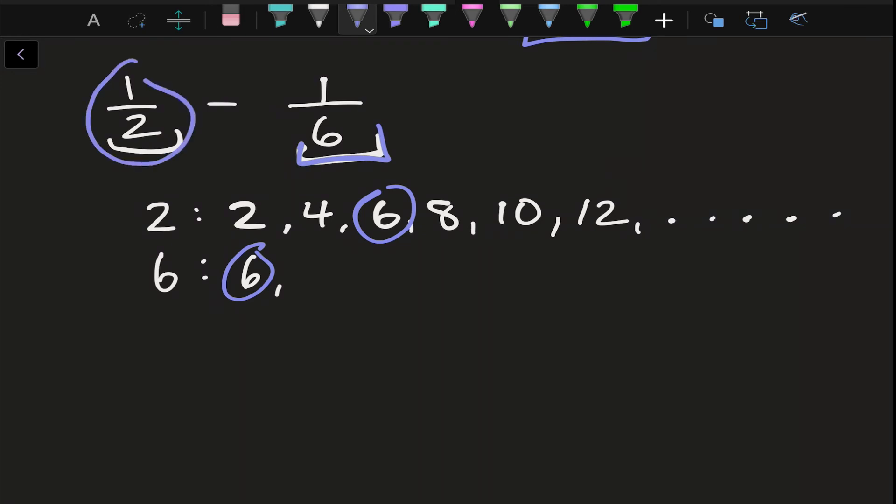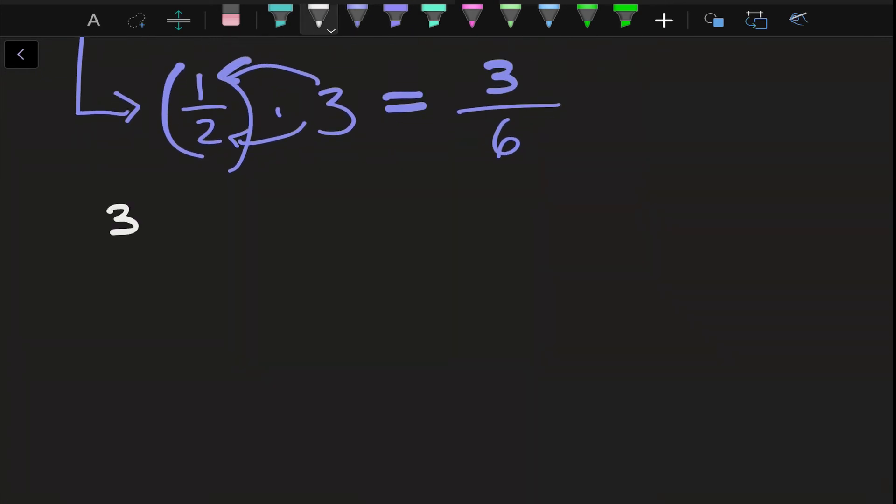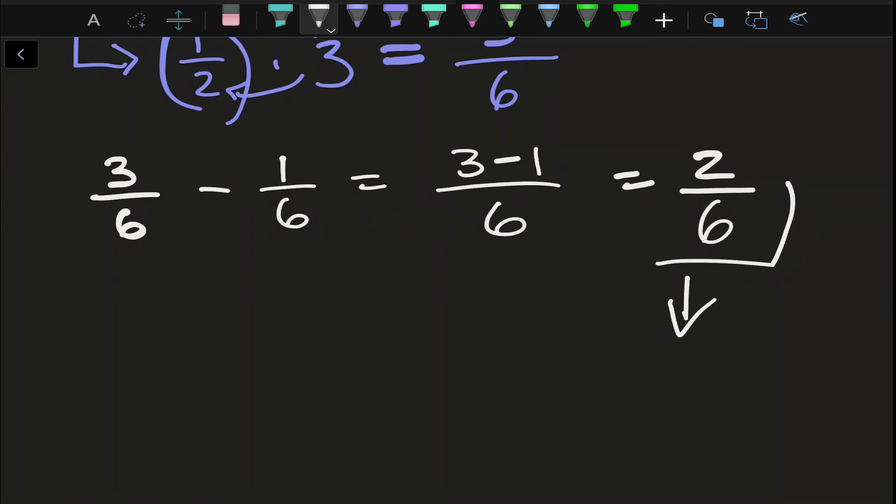So I know that 1 over 2 is going to have to be multiplied by 3. And we know 3 times 1 is 3, and 3 times 2 is 6, and of course that's what we need. So if I rewrite this, I get 3 over 6 minus 1 over 6, and that is equal to 3 minus 1 over 6, which is 2 over 6. Pretty straightforward. Again, if we take a look at this, this isn't in lowest terms. So I can end up dividing by 2 each, and I get 1 over 3 as my answer in lowest terms.